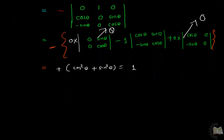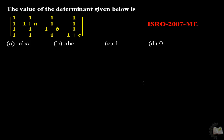Next, solve another question. This question was also asked in the 2007 mechanical engineering exam. The matrix looks very big with cosines, but don't be hesitant after watching this type of matrix. Your answer will be very small, so keep patience and try to solve it. It is a 4×4 matrix and you have to find the determinant by applying the properties of determinants.